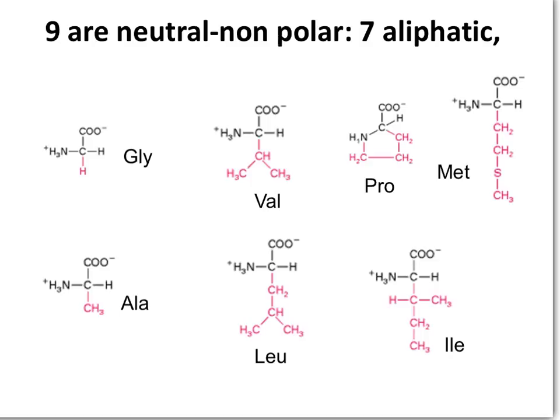During the formation of the tertiary structure of a globular protein, hydrophobic (non-polar) amino acids will be placed in the interior of the protein, while polar amino acids will be placed on the surface — those are serine, glutamine, asparagine, threonine, and so on.